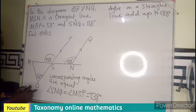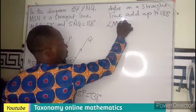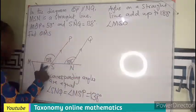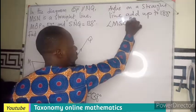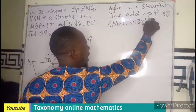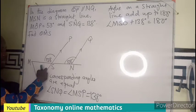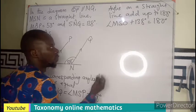This very angle plus the 138 that I have should also add up to 180. So the angle MSO is going to be 180 minus 138.